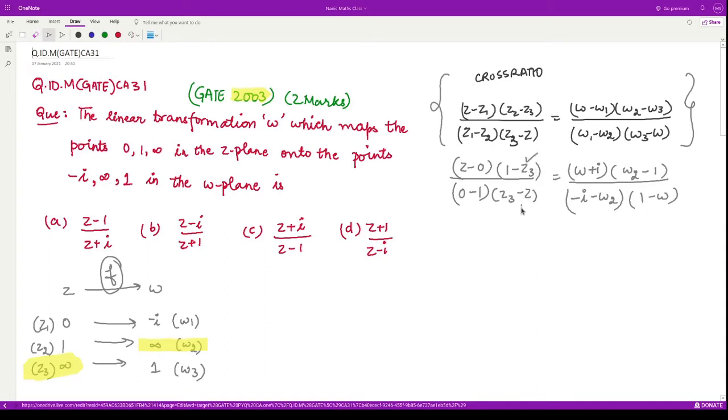From these two terms we can take z3 common. We would have z multiplied by z3 multiplied by 1/z3 minus 1, and we can take z3 common, so it would be 1 minus z/z3. The z3 terms cancel. On the right-hand side we have w + i, and we can take w2 common. It would be 1 - 1/w2 divided by w2 common, or we can take -w2 common, so it would be i/w2 + 1, and 1 - w.